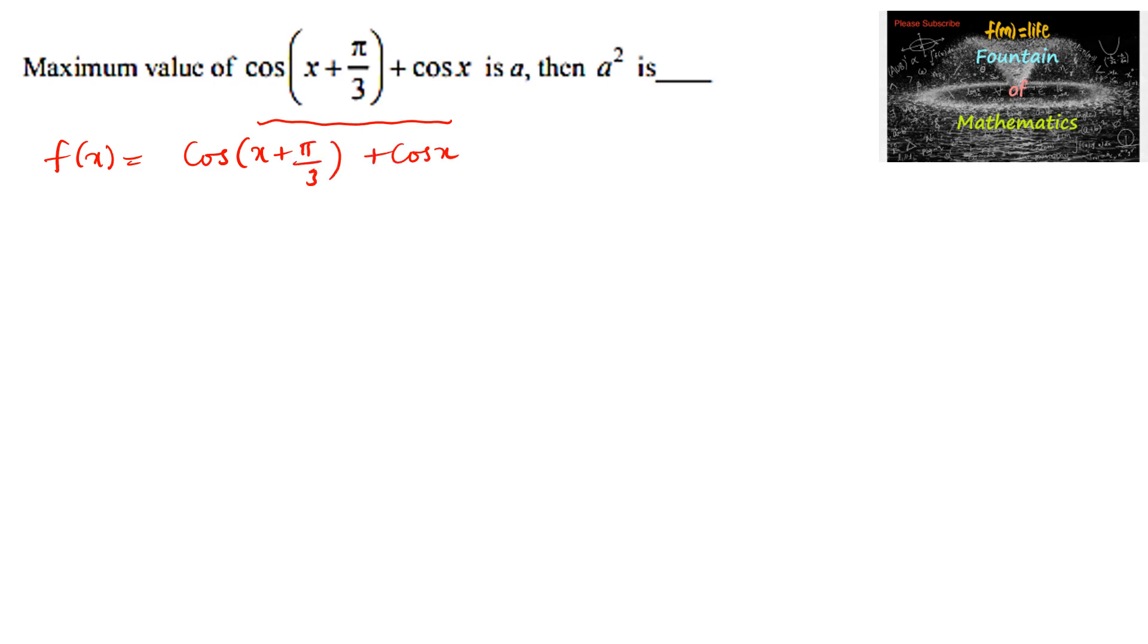Let us simplify this using the cos(A + B) formula: cos(A)cos(B) - sin(A)sin(B). We can write cos(x)cos(π/3) - sin(x)sin(π/3) + cos(x).